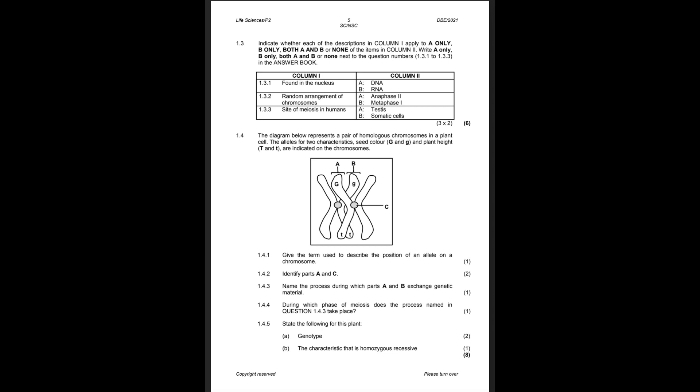Still in question one, for 1.4, I think this question is going to be a meiosis question. They love asking about crossing over or allele questions — they want to see if you understand how crossing over works, how the exchange of alleles works, and whether you could draw what the cells look like after this process has happened. It's a very common question that demonstrates your understanding of how meiosis actually works.